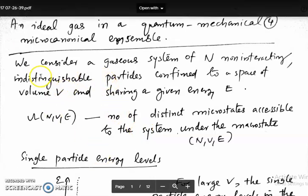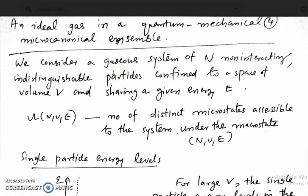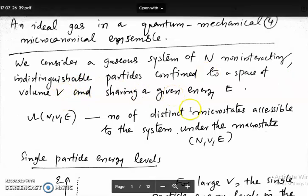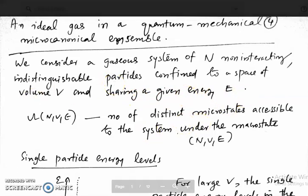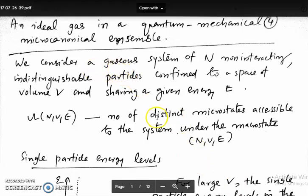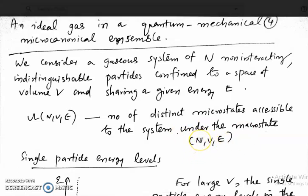Hi everybody. Today in this lecture we are going to consider an ideal gas in a quantum mechanical micro-canonical ensemble. We are considering a gaseous system of N non-interacting, indistinguishable particles confined to a space of volume V and sharing a given energy E. We are now considering the micro-canonical ensemble where the macro state is specified by three variables: number of particles, volume, and energy.